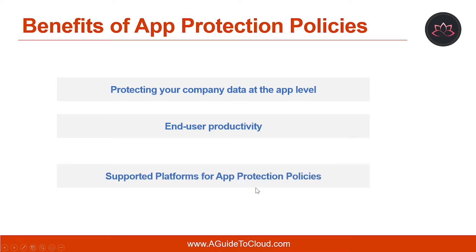App Protection Policies can be applied to mobile apps on iOS and Android devices that support MAM. They can also be applied to Windows Information Protection-aware apps on Windows 10 devices. If your iOS or Android app does not support MDM, you can enable MAM support by using the Intune App Wrapping Tool. Note that the Intune App Wrapping Tool does not support apps in the Apple App Store or Google Play Store — it can only be used with existing line-of-business applications.